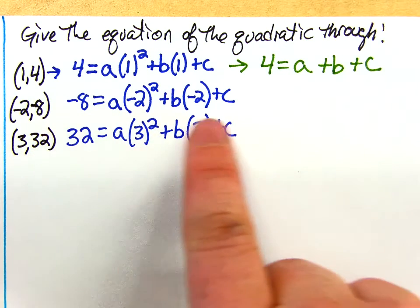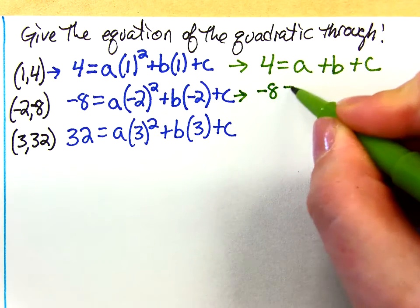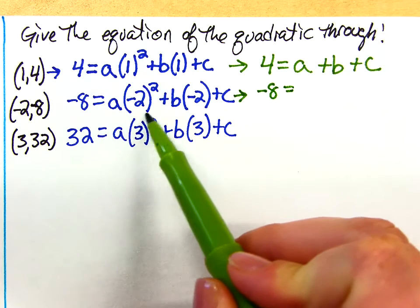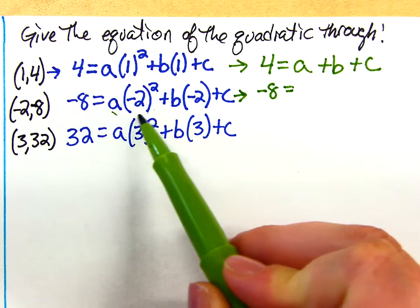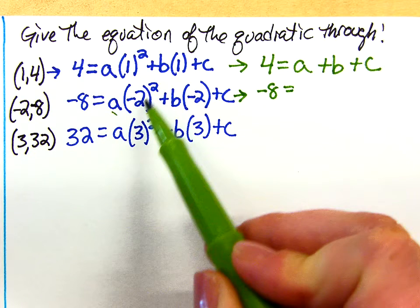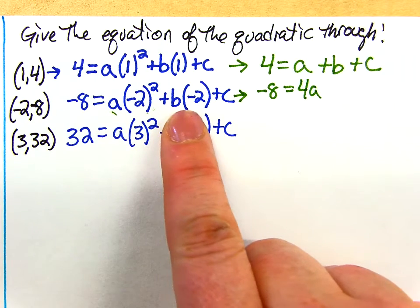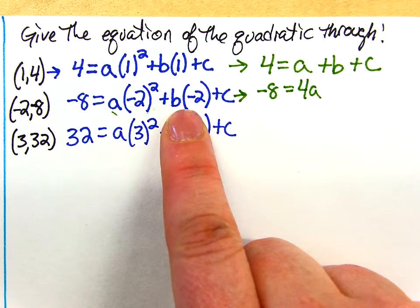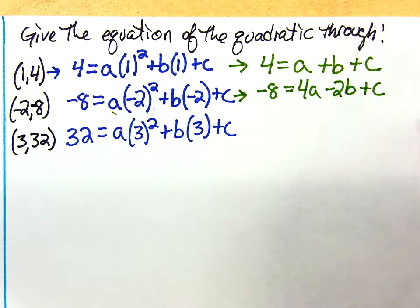I'm going to do the same thing with my second one. So that one's now going to be negative 8 equals, what would this chunk turn into? 4a, right? Because negative 2 squared is a positive 4, so that's really 4a. Now I really have a minus 2b, minus 2b and then plus c.